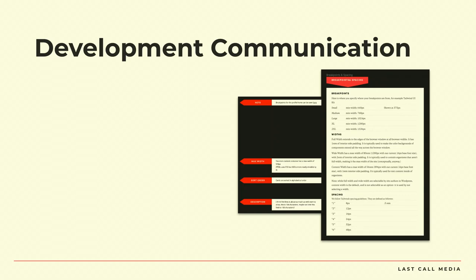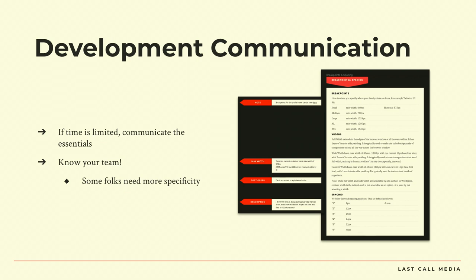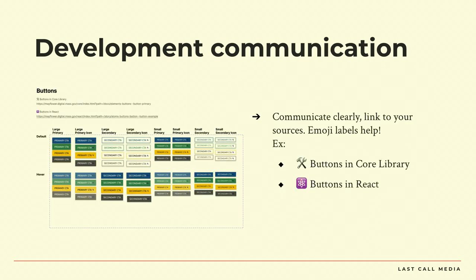Development communication — if time is limited, at least communicate the essentials to development. You might not have time for an hour sit-down meeting where you go through all of your screens. But you can know your team — some developers can think super creatively on the fly and see your intent, while some might need more specificity in the documentation. Using our annotation notes: cards are sorted in alphabetical order, the main container is a max width of 920. Doing a lot of that asynchronously has worked really well. Communicate clearly. It helps to link to those sources if a design system is built in multiple pattern libraries. These are buttons in a design system that exist in two different libraries — React and a pattern lab — so we linked to each. When a developer follows that link to the main component, they can say 'I'm working on the React project' and grab that button.